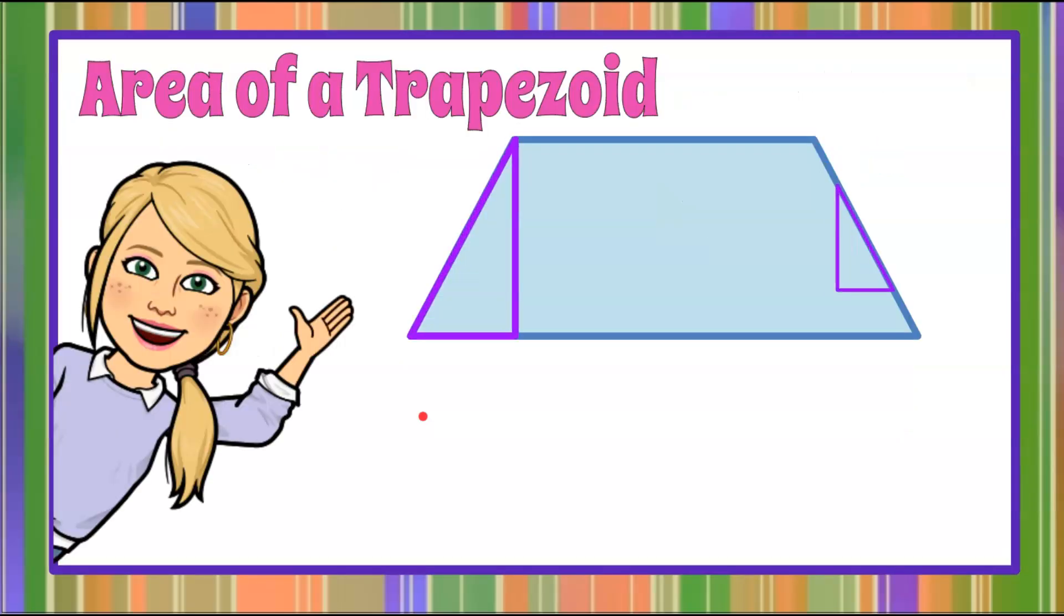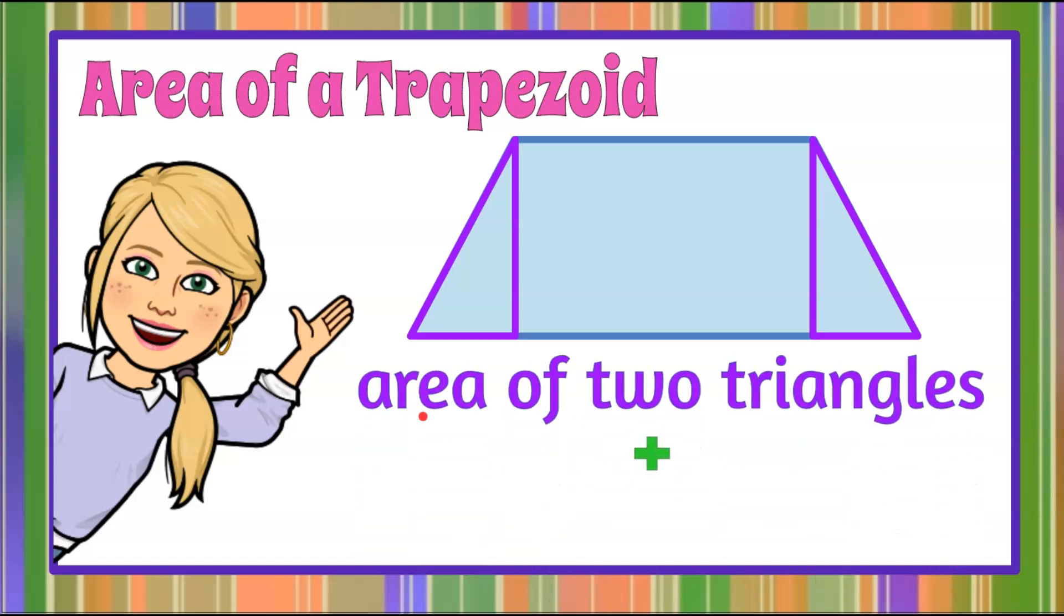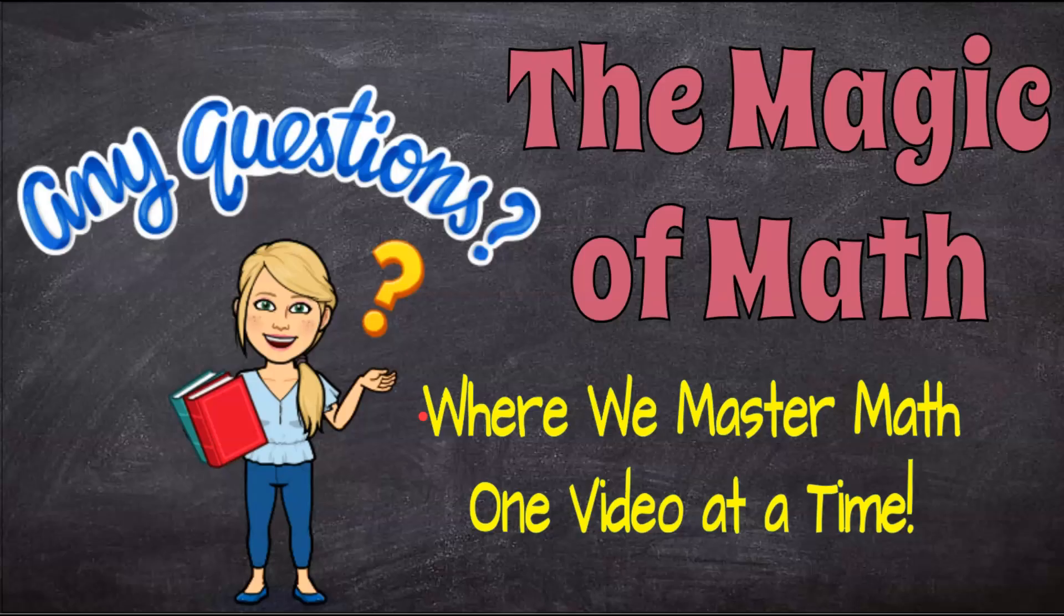And that is how you find the area of a trapezoid by breaking it down into two triangles and a rectangle. That's the magic of math where we master math one video at a time. Thanks for joining me today and I hope you'll come back soon.